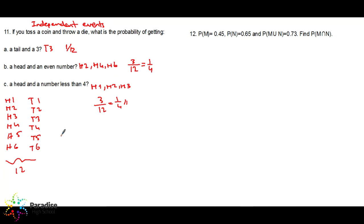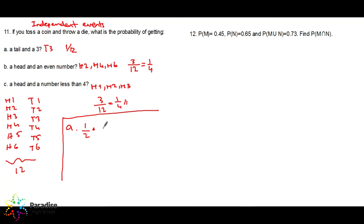That is one way of answering this question, but there is a shortcut. Since these are independent events, we find individual probabilities and multiply. The probability of a tail is 1 over 2, multiplied by the probability of a three when you roll a die, which is 1 over 6 — giving 1 over 12, the same answer. For a head and an even number: 1 over 2 times 3 over 6.